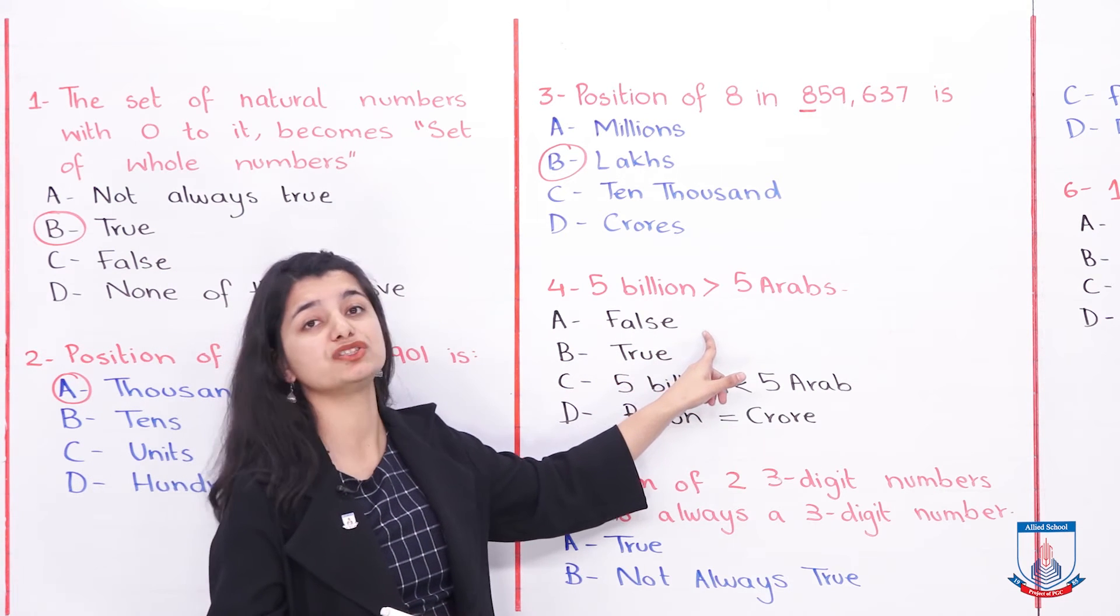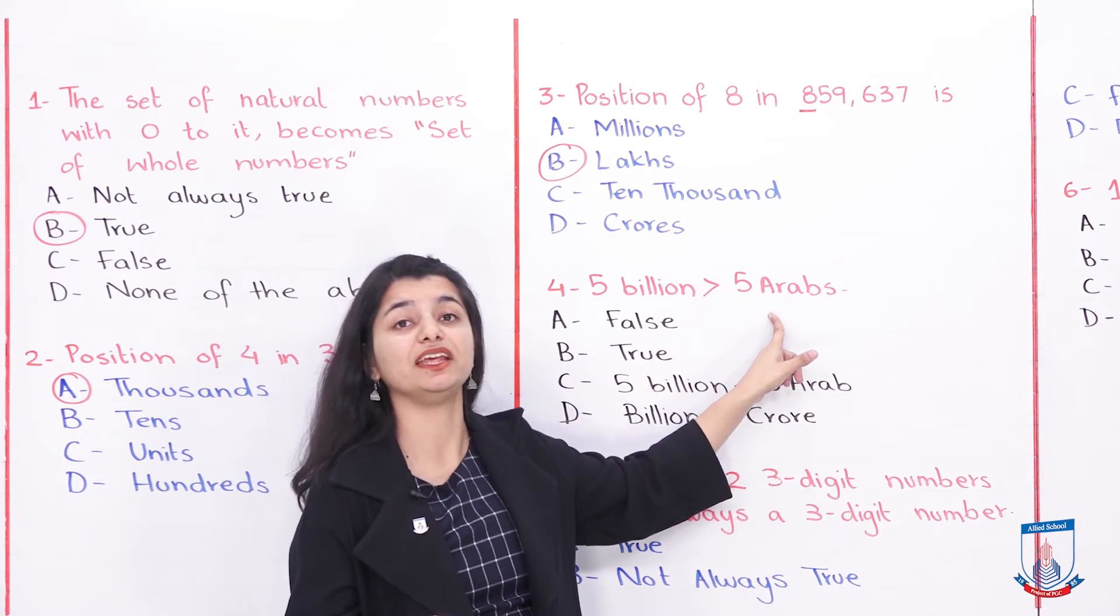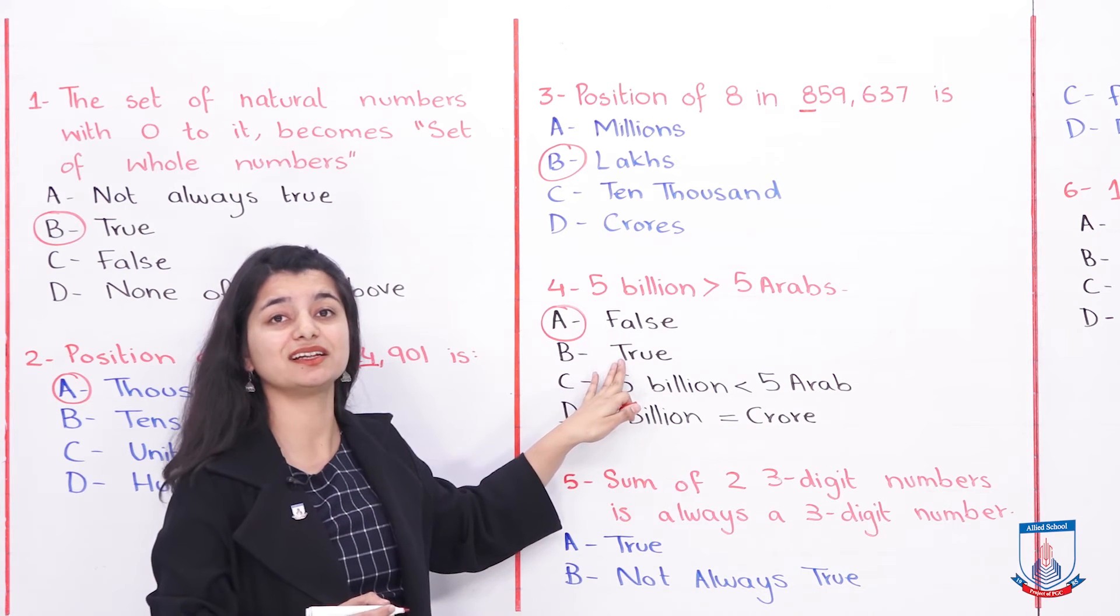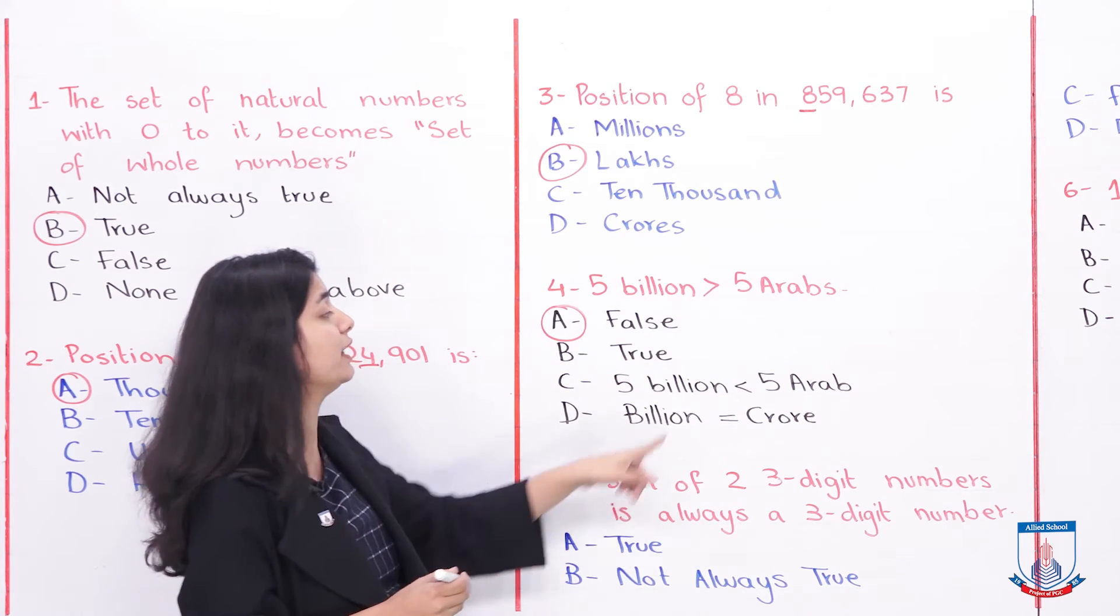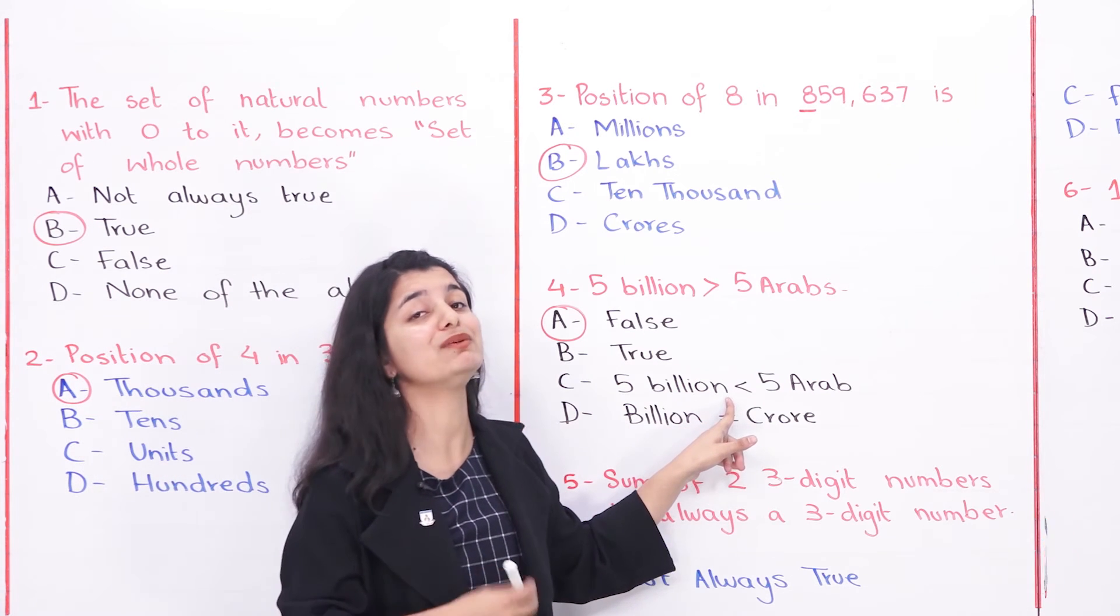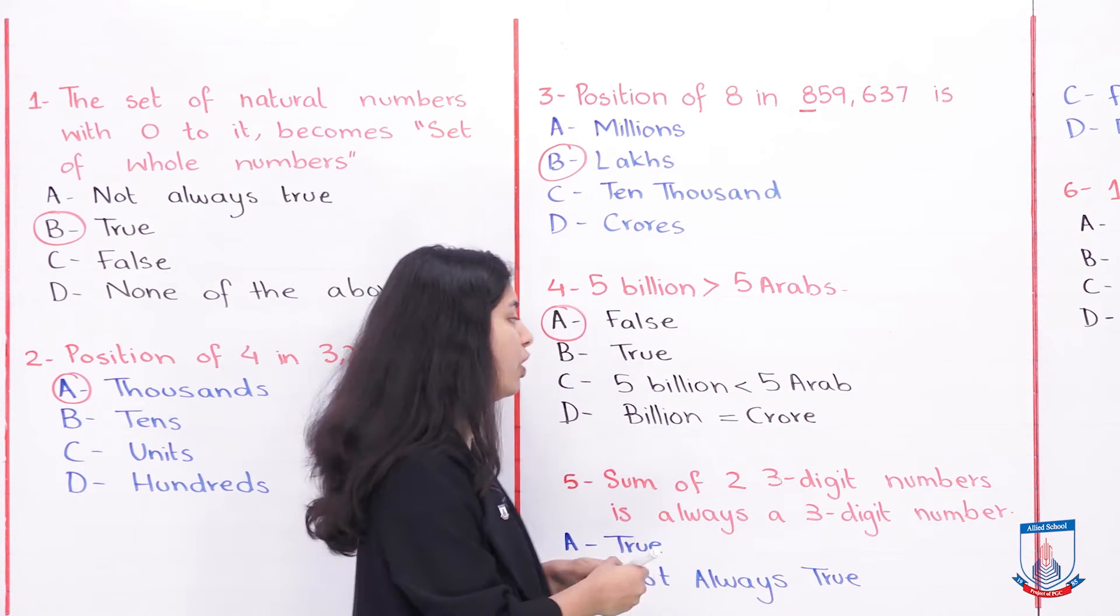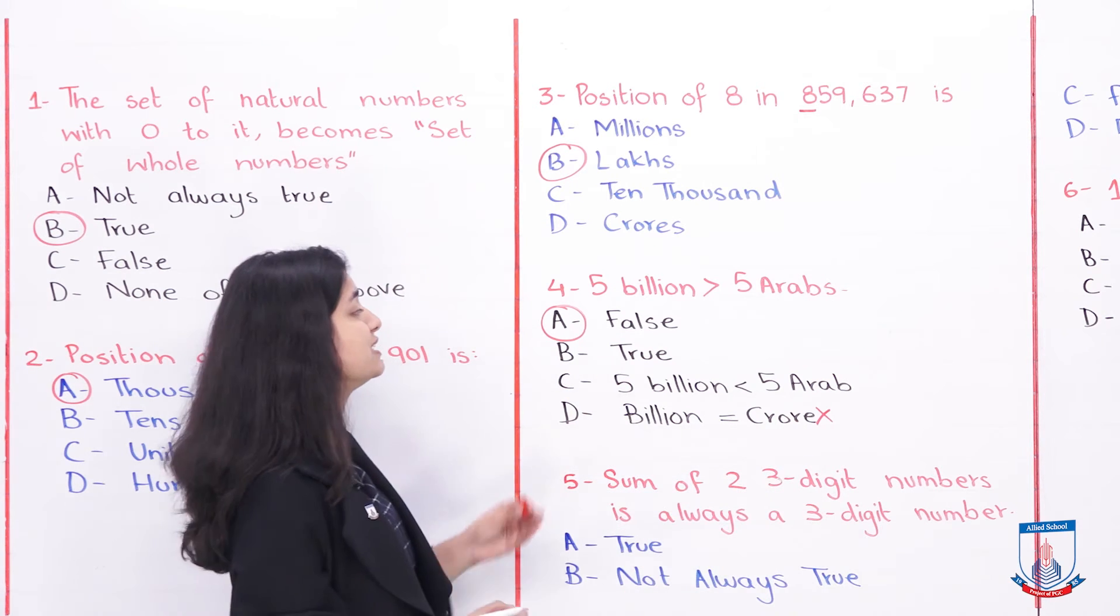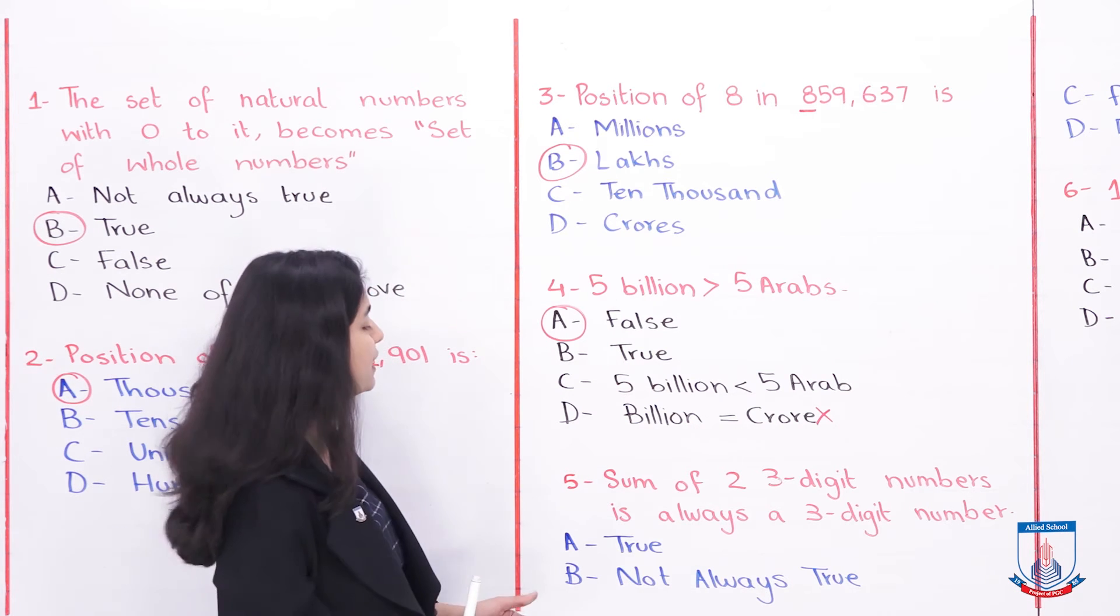This is false. The statement that billions are bigger than Arabs is not true. We will say that false is correct. True is not possible. Why? Because they are the same. When their value is the same and placement is the same, so this cannot be true. 5 Billions is less than - obviously, they cannot be less than because they are both equal. And Billion is equal to crores - that's wrong. Billion is not equal to crores. Billion is equal to Arabs. Your answer will be option A, false. Why? Because Billions are equal to Arabs.